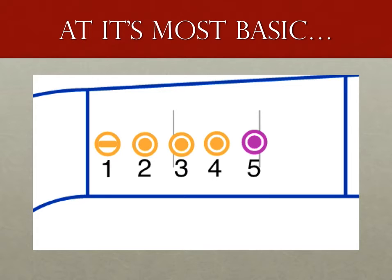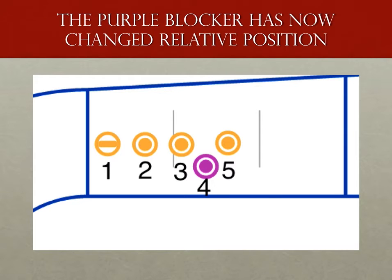If the purple blocker wanted to take a position away from the corresponding yellow blocker, she would have to pass, knock down, or send that blocker out of bounds. If she passes the blocker's hips, she would suddenly be number 4, and the blocker she passed would be number 5. We've now effected a change in relative position.